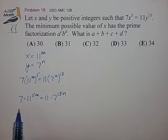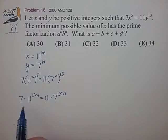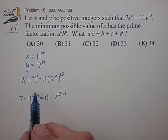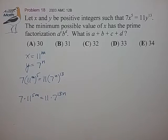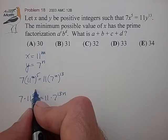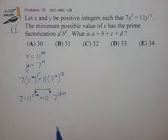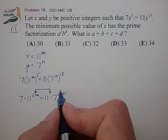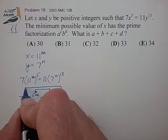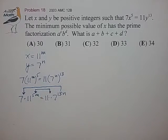And now since we have prime decomposition on both sides of this equation, we can match up the exponents of the different prime factors. So we know that 5m has to match up with the exponent on 11 on this side, and 13n has to match up with the exponent of 1 on the left side.